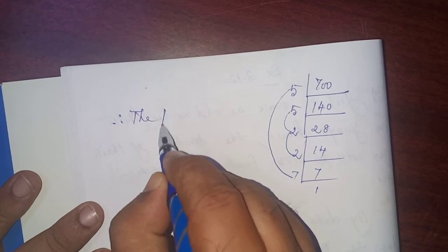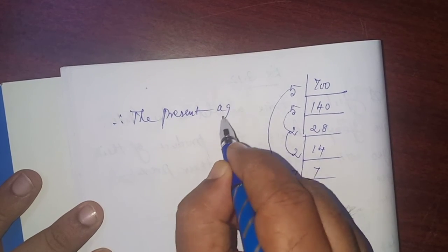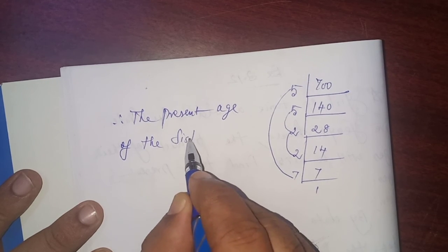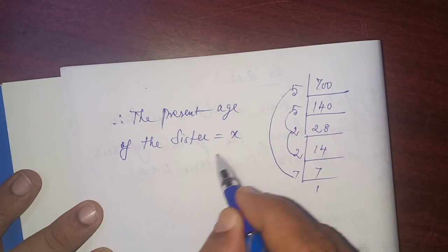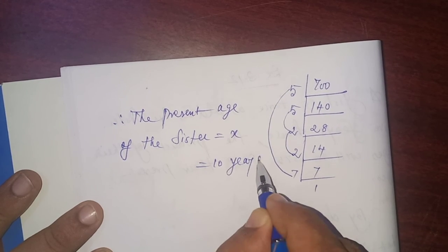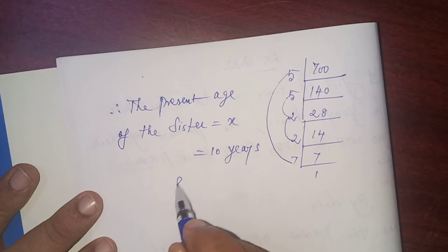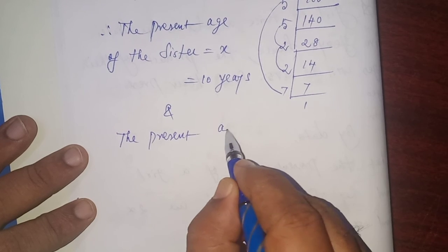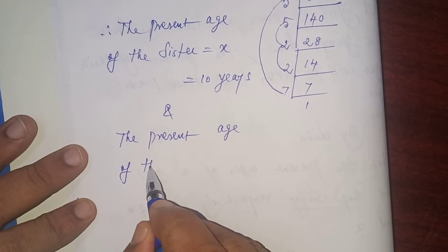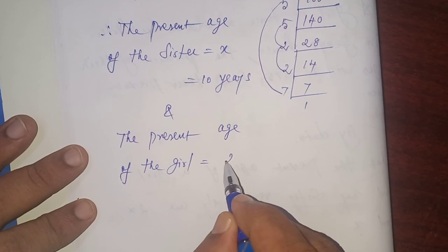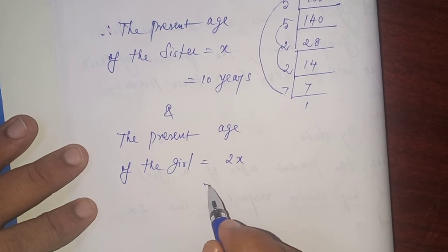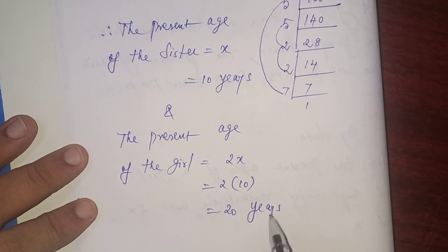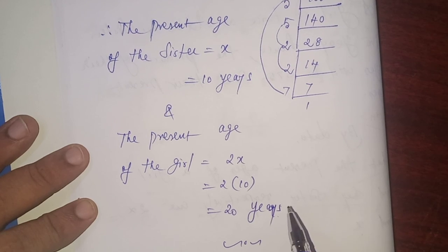Therefore, the present age of the sister equals x, that is 10 years. Because the value of x is 10. And the present age of the girl equals 2x, that is 2 into 10, that is 20 years.